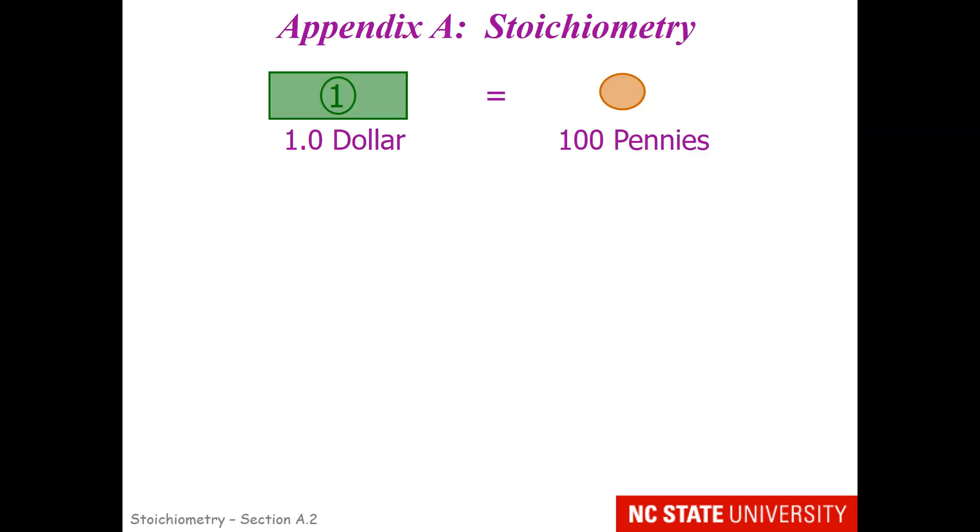I believe that students have known about stoichiometry basically since third grade, when you were taught about U.S. currency, or if you're an international student, the currency in your country. For U.S. currency, we know that one dollar is equivalent to 100 pennies. This is a ratio of 1 to 1. If I give a person one dollar and they give me back 100 pennies, we have made an even exchange.